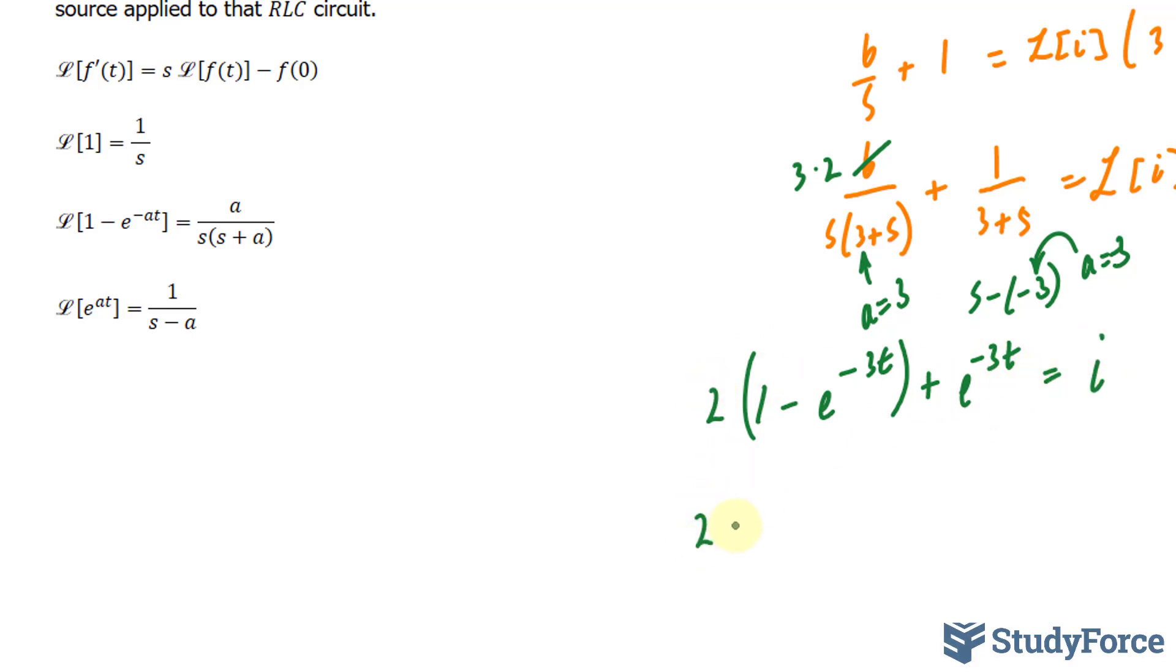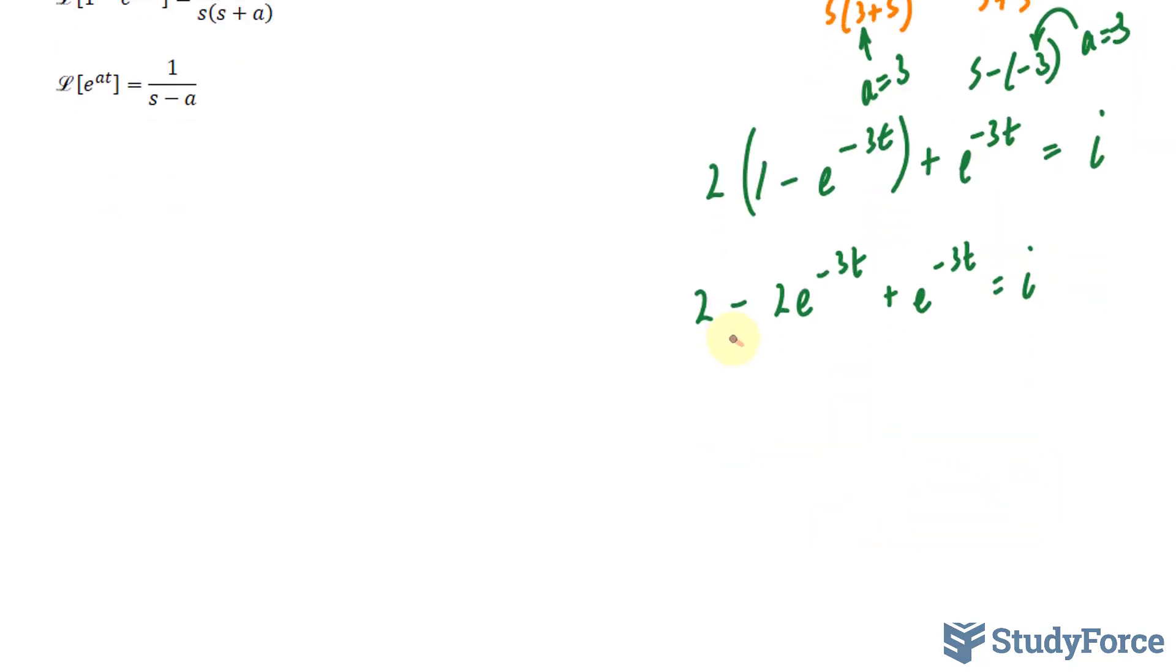If we expand this, we get 2 minus 2 times e to the power of negative 3t plus e to the power of negative 3t is equal to i. I'll combine these two terms. This gives me 2 minus 2 plus 1 is negative 1. So I have 2 minus e to the power of negative 3t is equal to i.